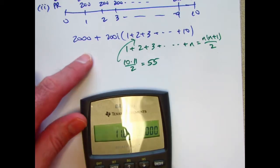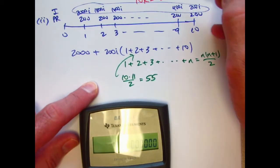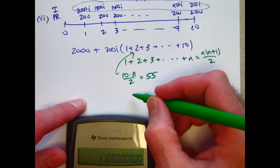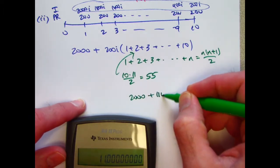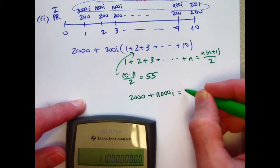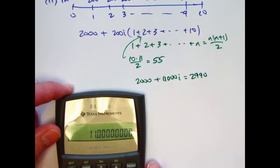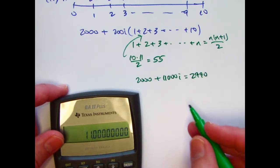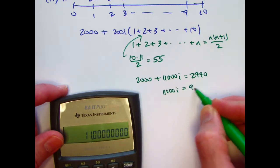So I've got 2,000 plus 11,000i will equal 2,990. I better write that down, I think. 2,000 plus 11,000i equals 2,990. And I think I won't bother writing down all the decimal places there. I need to subtract 2,000. 11,000i is 990.